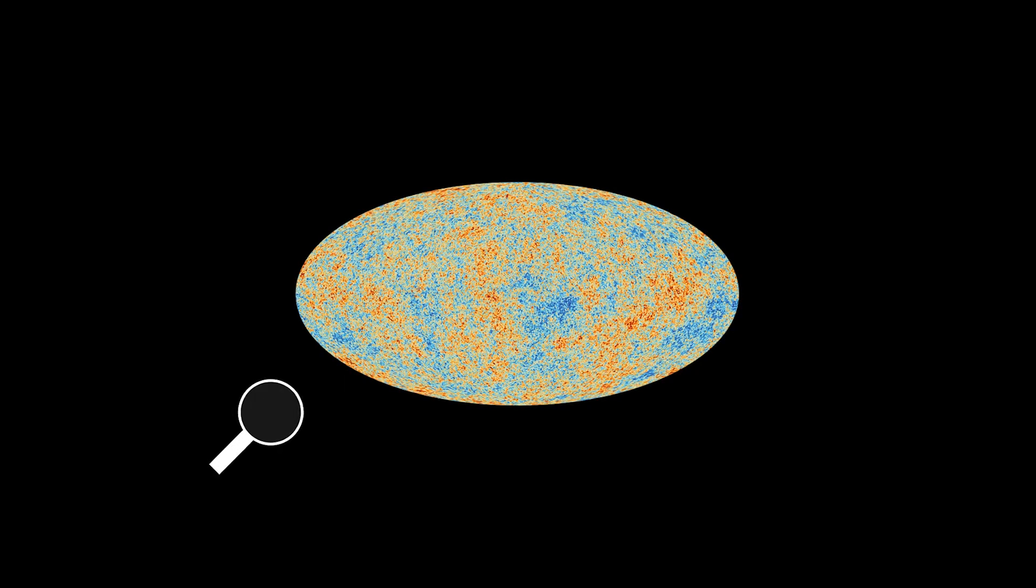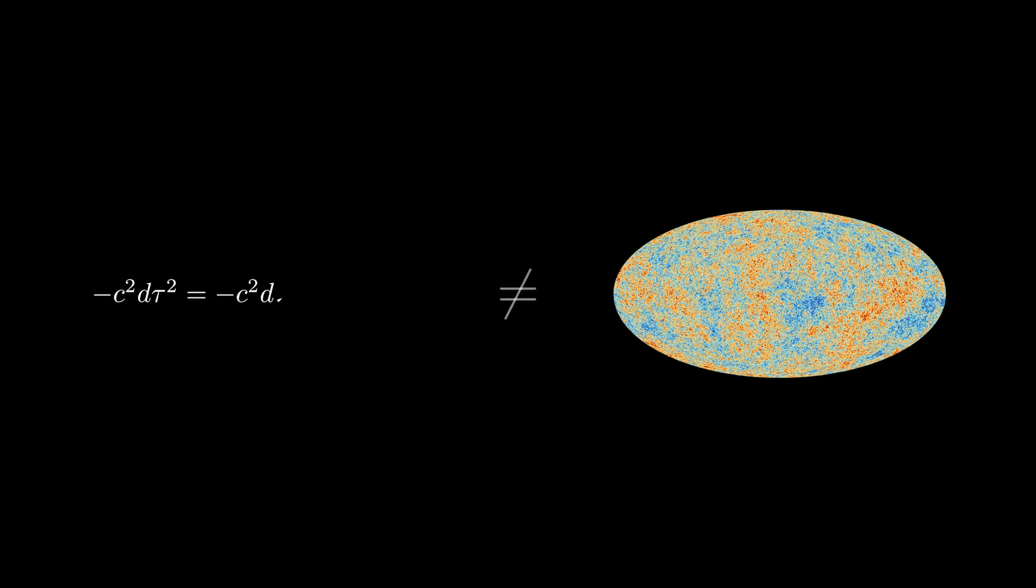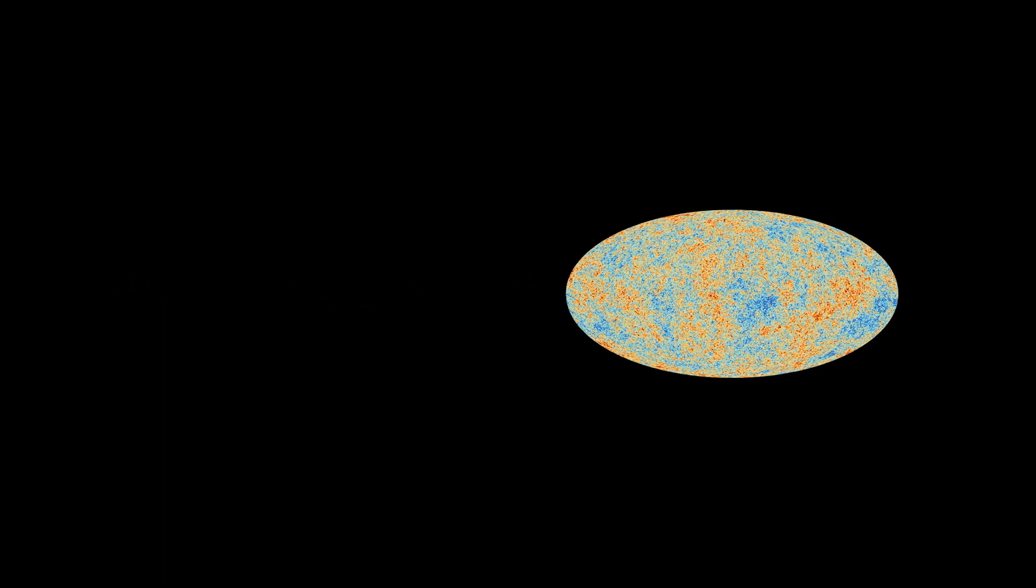Once we have a map of these density fluctuations, how do we interpret what we see? After all, our models don't predict maps. Meaning that while cosmological models can predict certain overall properties of the CMB, they won't tell us exactly where a given bright or dim spot should be. So what we're really looking for is a way to quantify some particular characteristics we see in the map.